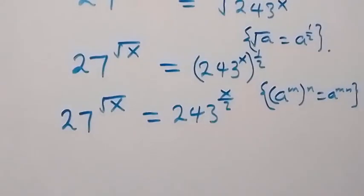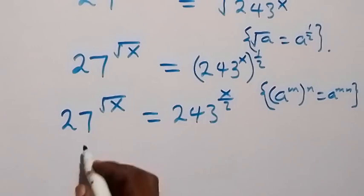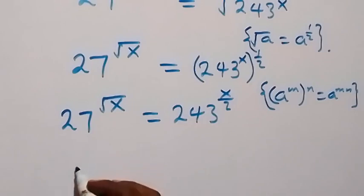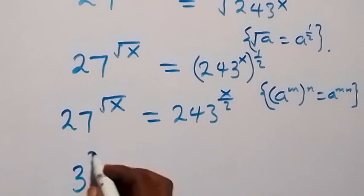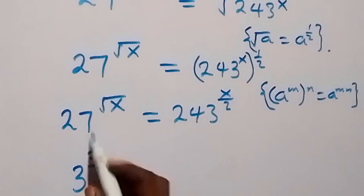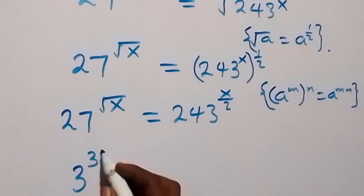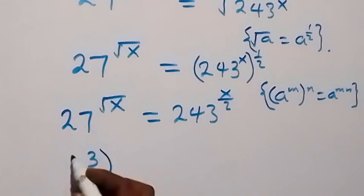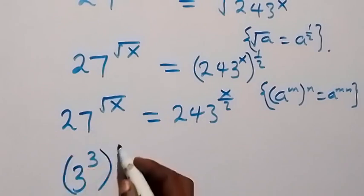Then let's change both sides to the same base, which is base 3. 27 can be written as 3 raised to power 3 — that is, 3 multiplied by itself 3 times — then raised to power root x.